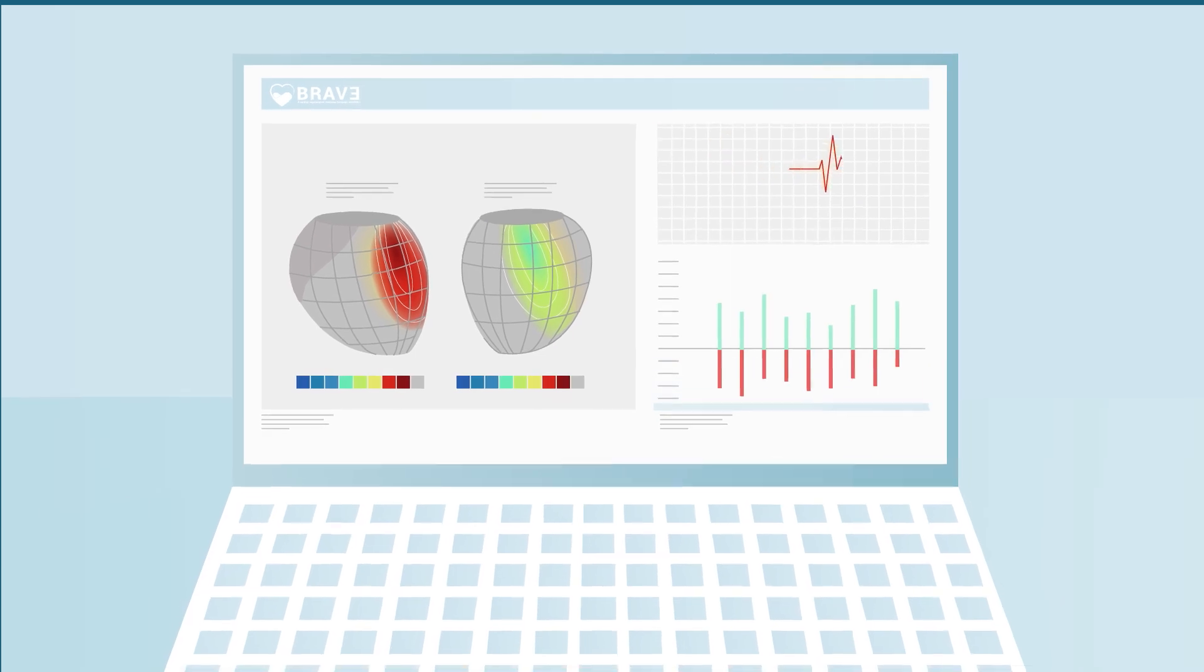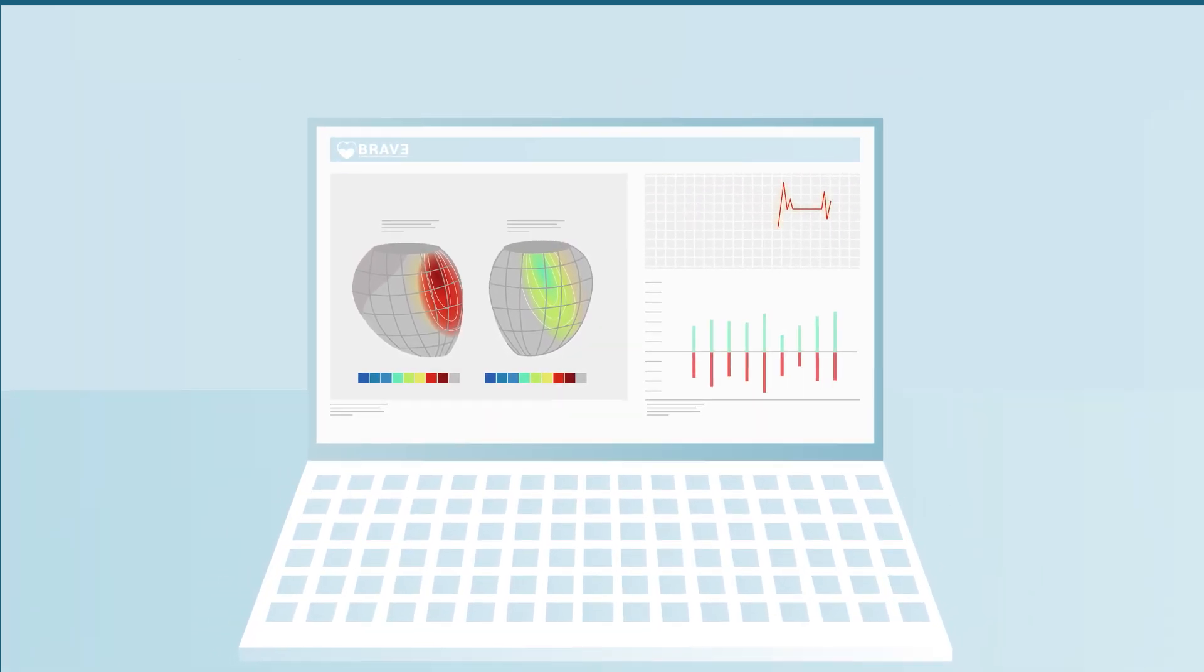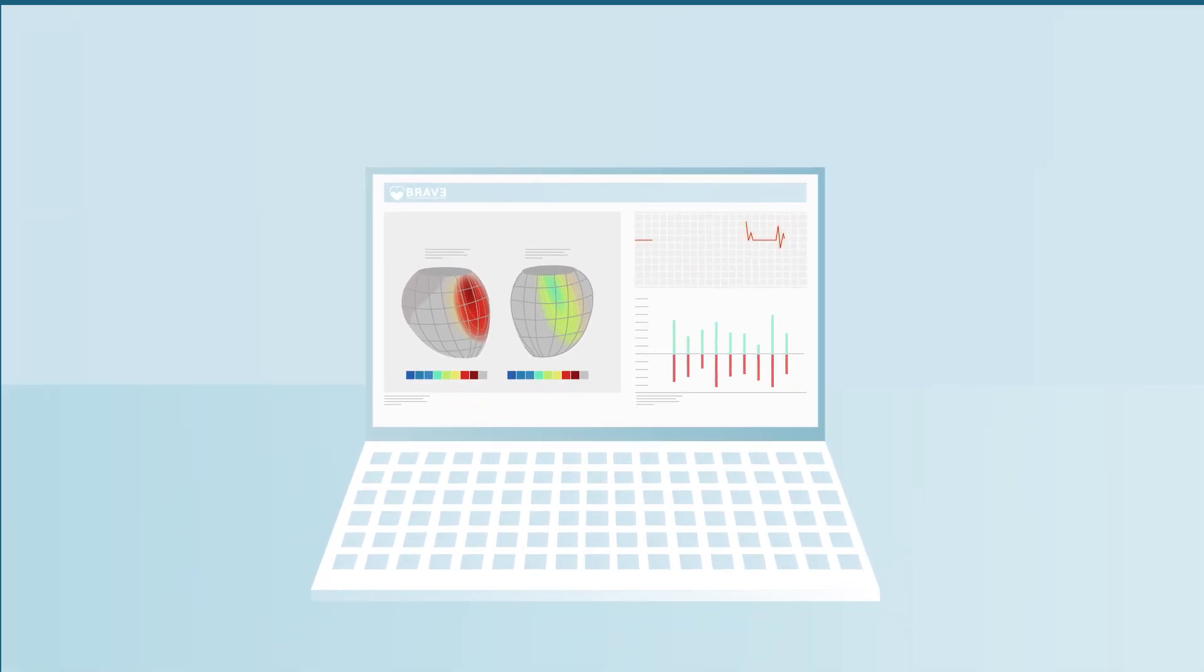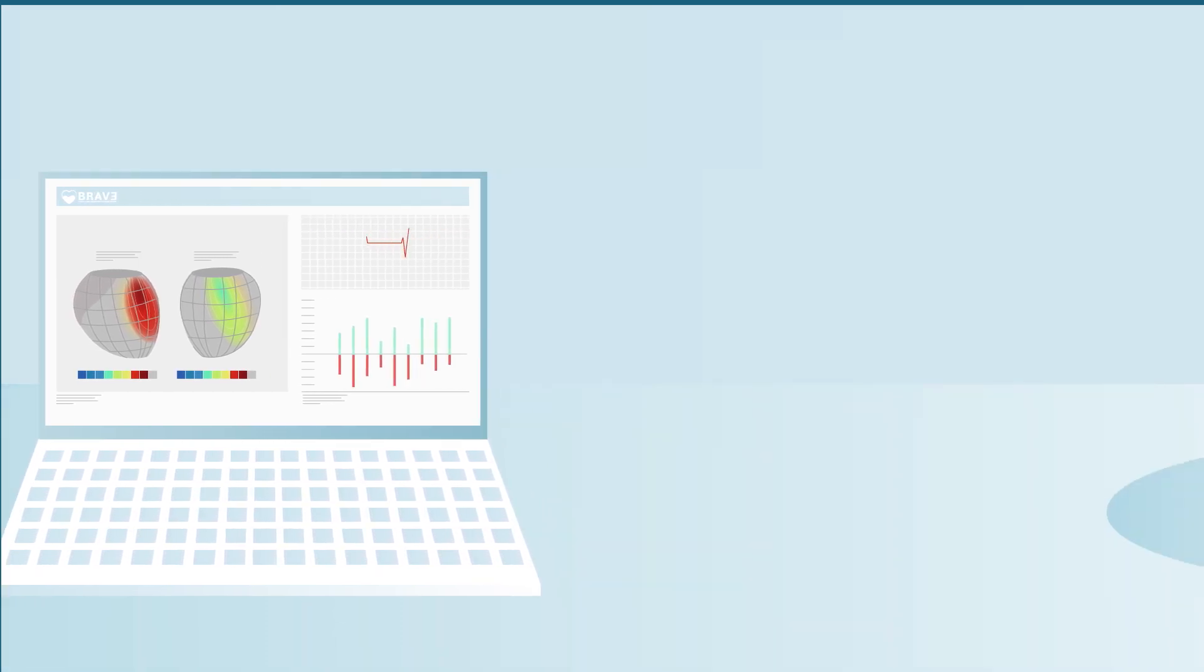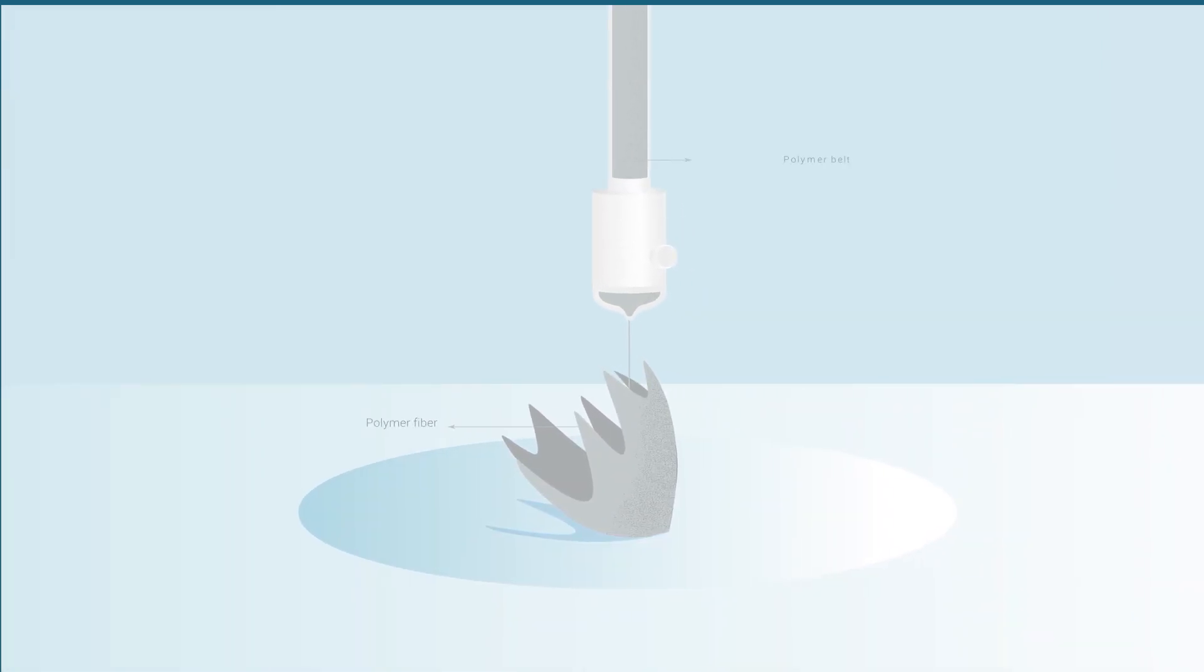The project will use computational modeling to assess the three-dimensional structure of the heart and how this relates to heart function. BRAVE will engineer a polymeric scaffold using 3D printing techniques.